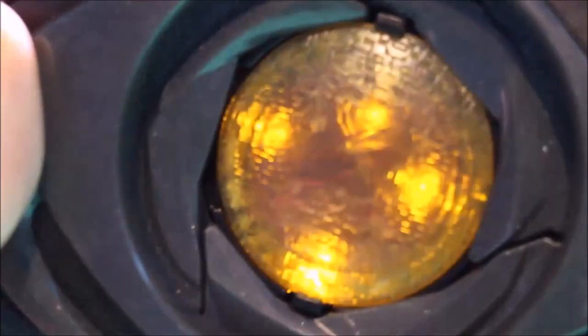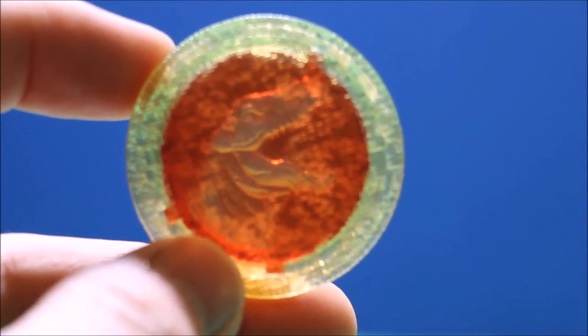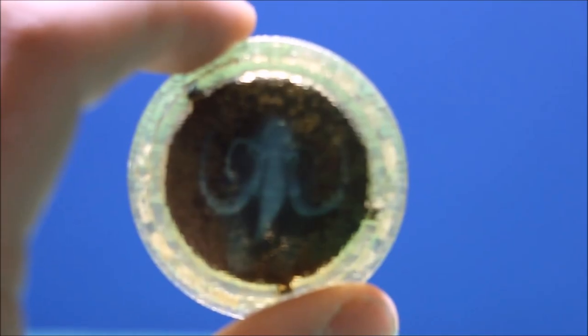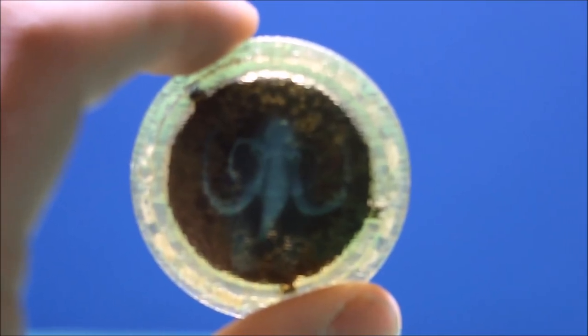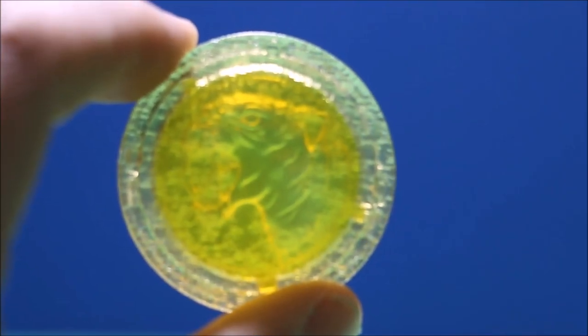The problem is when the lights stop spinning then you just see the lights, so I wish they would have done something with that. Here you can actually see the coins better if I put a light behind it. There you have the T-Rex, the Mastodon, the Triceratops, the Saber-Toothed Tiger, and the Pterodactyl.